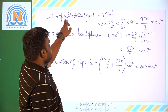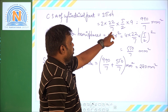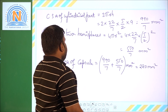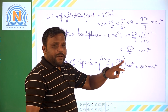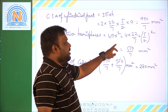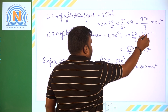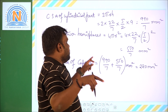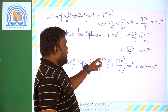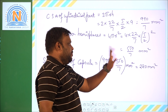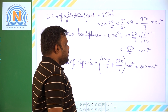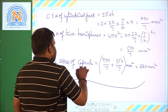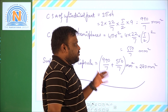CSA of cylindrical part = 2 × (22/7) × (5/2) × 9 = 990/7 mm². CSA of 2 hemispheres = 4 × (22/7) × (5/2)² = 550/7 mm². Total surface area of capsule = 990/7 + 550/7 = 1540/7 = 220 mm². This is the complete surface area of the capsule. Thank you.